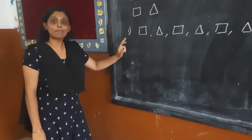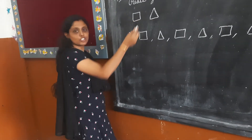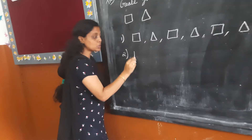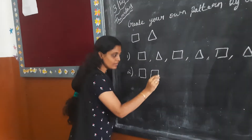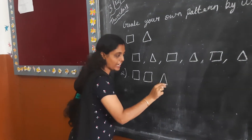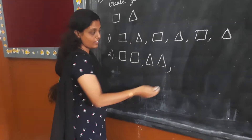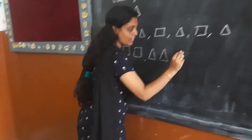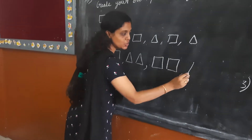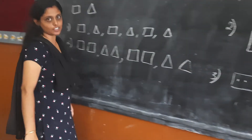What is the next pattern you can create? By using a square and triangle — two squares and two triangles, again two squares, again two triangles. This is another pattern.